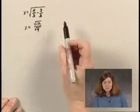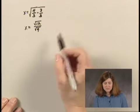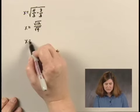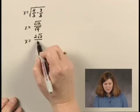The square root of 12 is 2√3. The square root of 9 is 3. So I have x = 2√3/3.